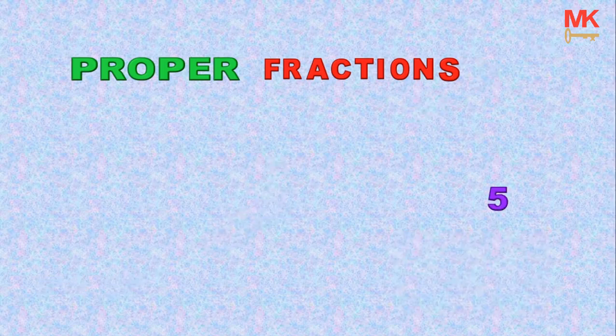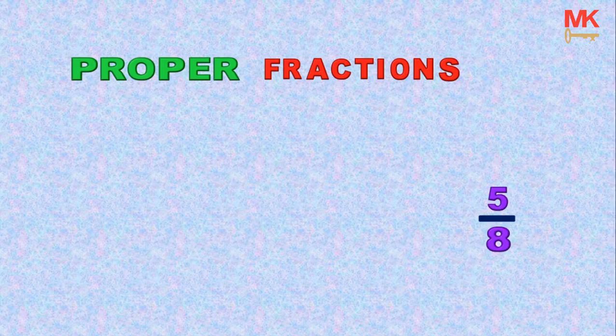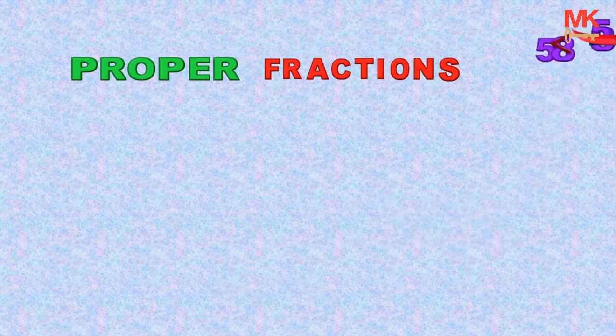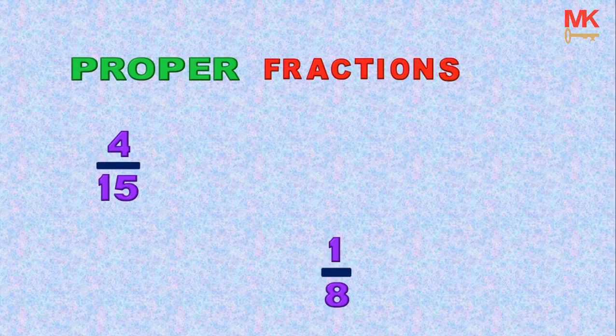Also, the fraction 5 out of 8 is a proper fraction because the numerator which is 5 is less than the denominator which is 8. So in any proper fraction, the numerator is always less than the denominator. Other types of proper fractions are 1 over 8, 4 over 15, 5 over 12, and so on.